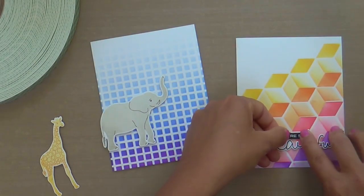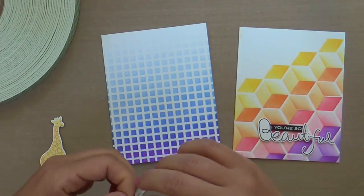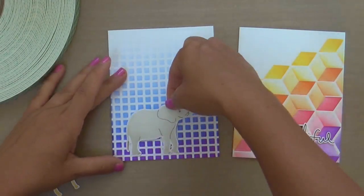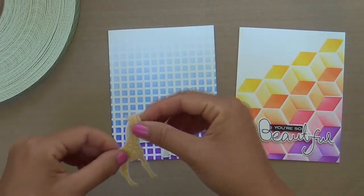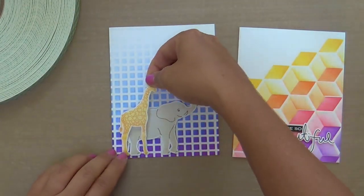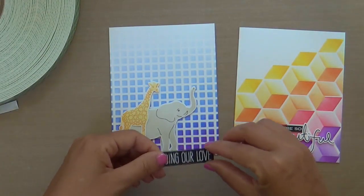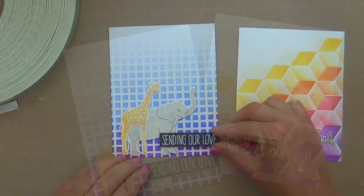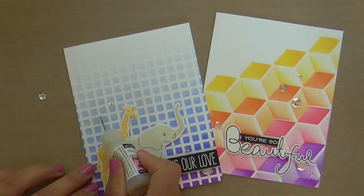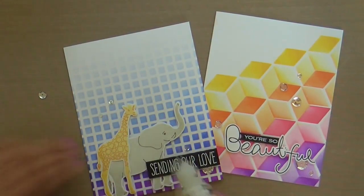I stamped that beautiful word sentiment from the simple flower stamp set. It has a coordinating die. I went ahead and embossed some sentiments on black strips with white embossing powder for both cards, the ones from simple flowers and now the baby zoo animal. That sentiment is from the baby zoo stamp set as well.